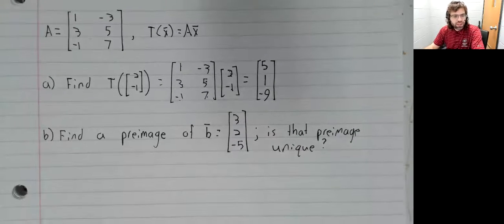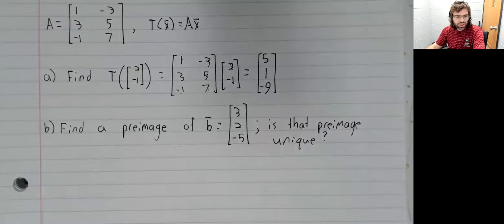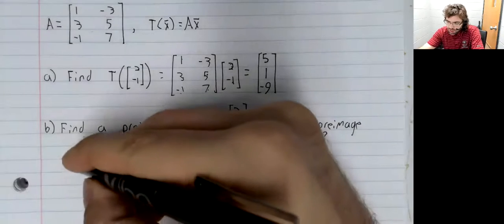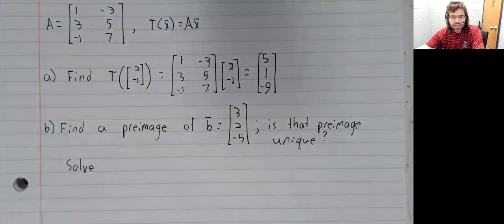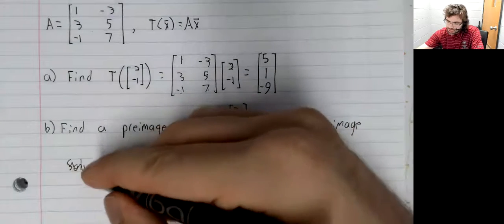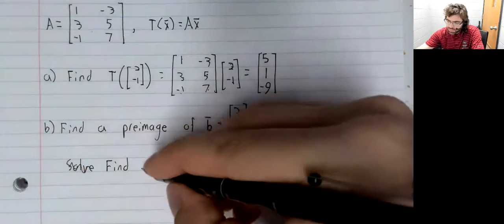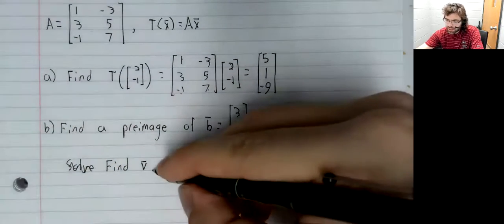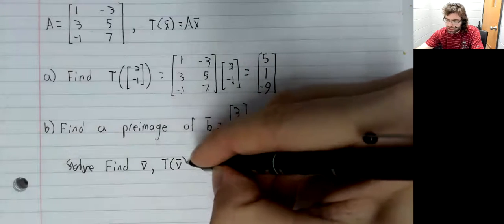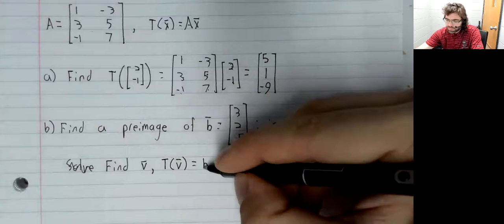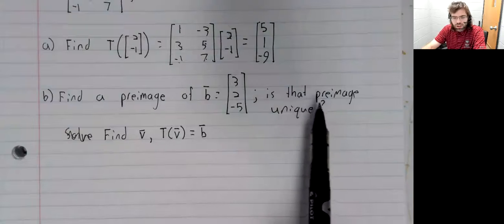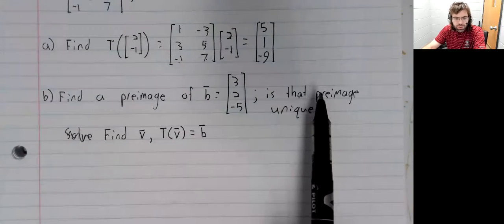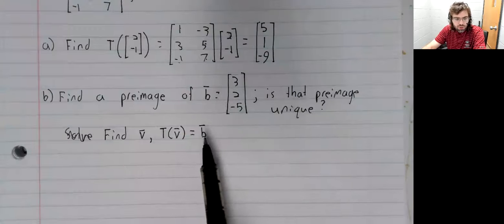Now let's find the pre-image of a vector. The pre-image - I guess I haven't explicitly defined that, but it's a definition from college algebra. We're being asked to find a vector v such that the image of v is b, and asking are there any other vectors whose image is also b?